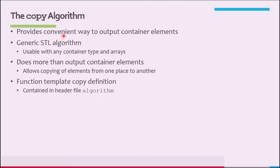Now, let's talk about the copy algorithm. STL Demo01 used a for loop to output the elements of a vector container. The STL provides a convenient way to output the elements of a container with the help of a function copy. The copy function is provided as part of the generic algorithms of the STL and can be used with any container type as well as arrays. Because we frequently need to output the elements of a container, let us describe this function.